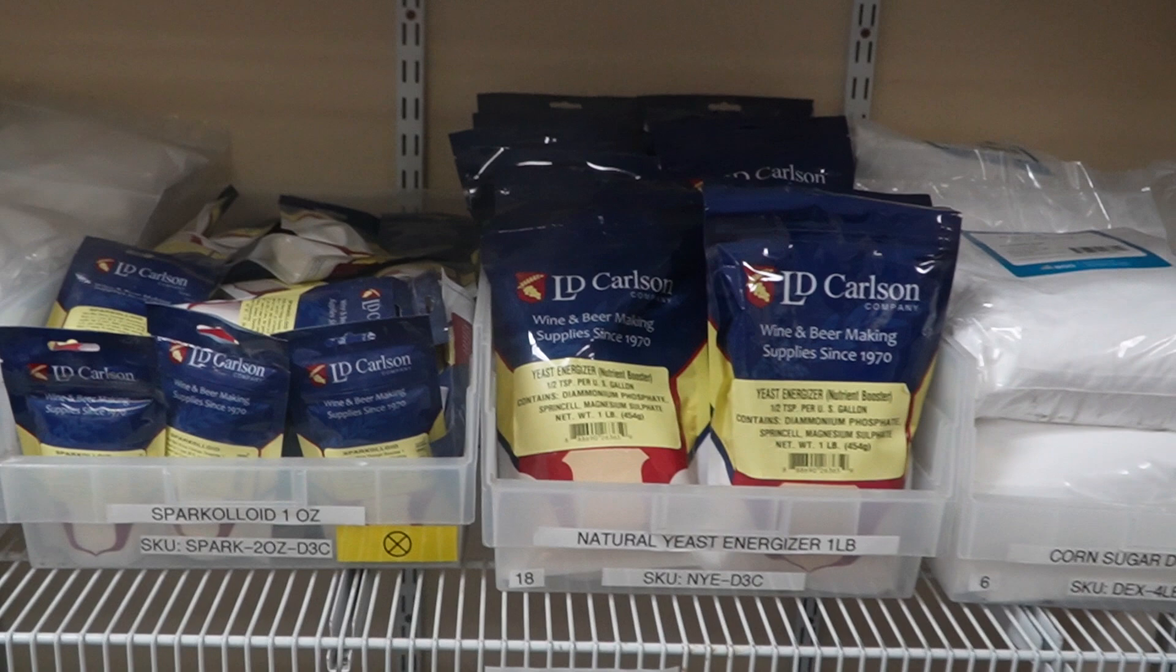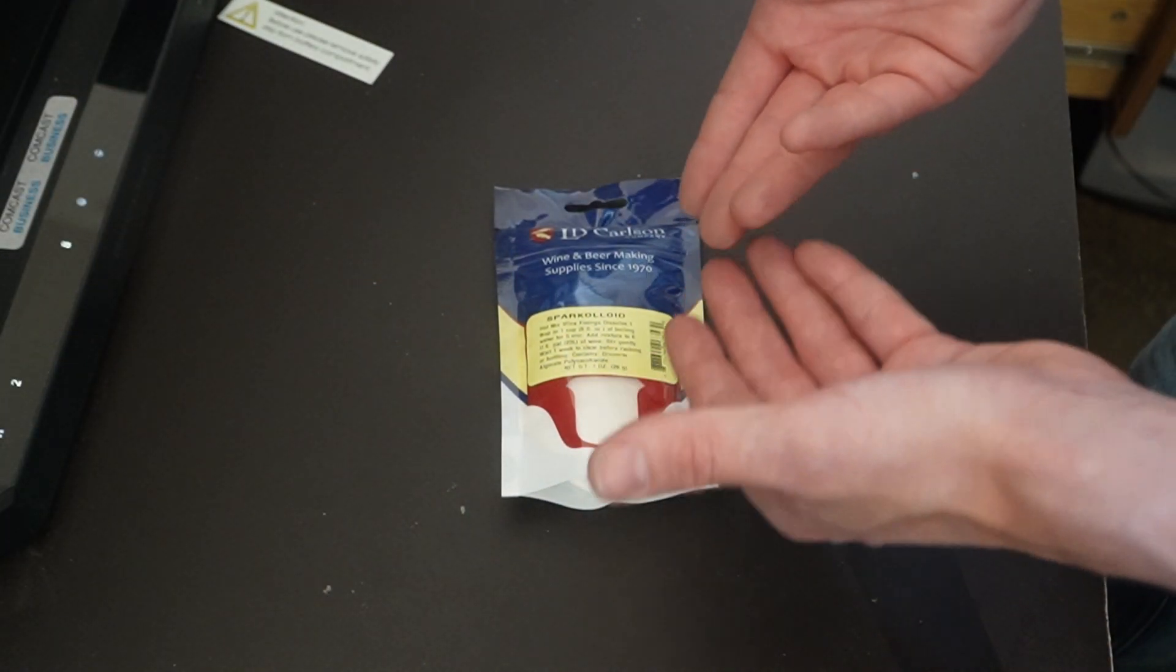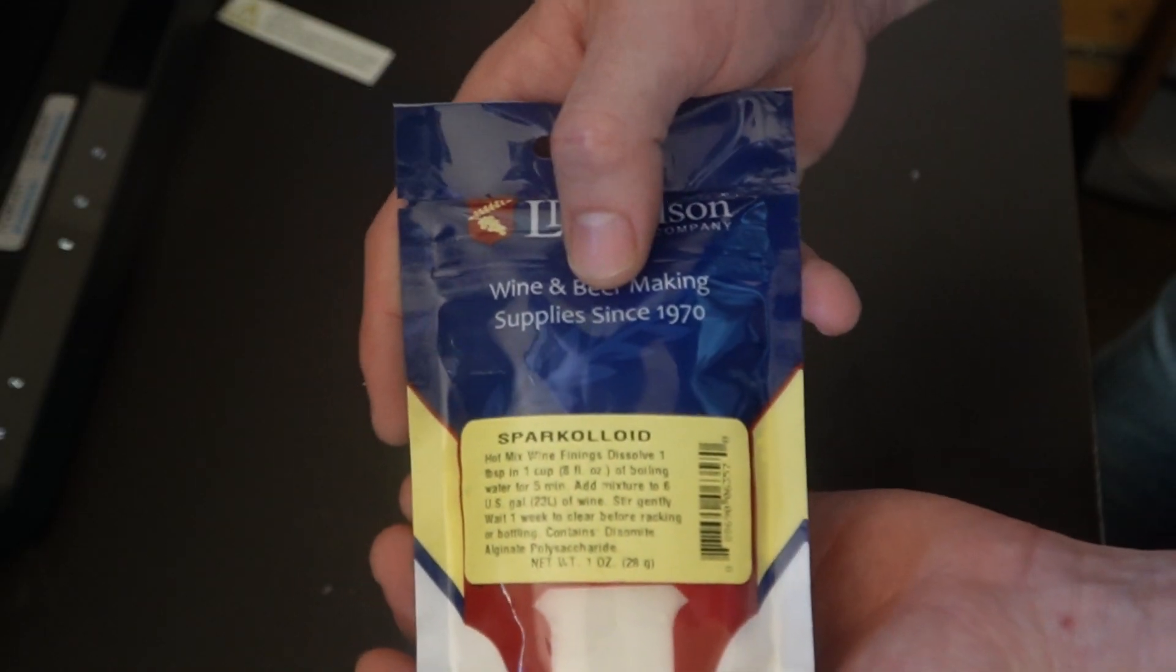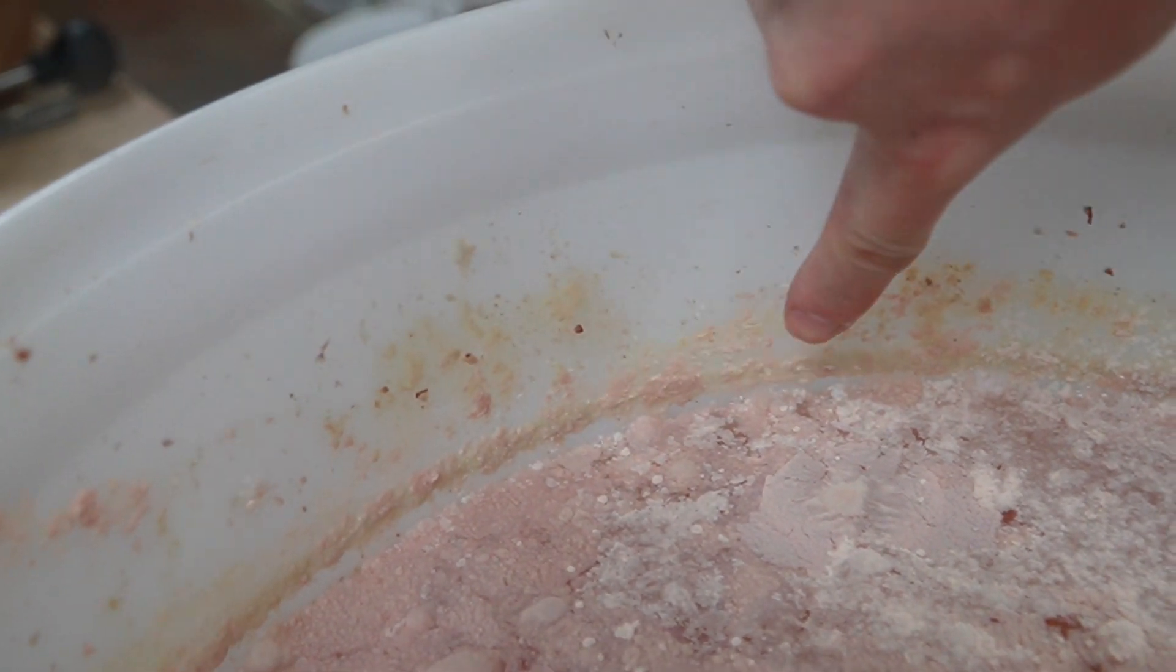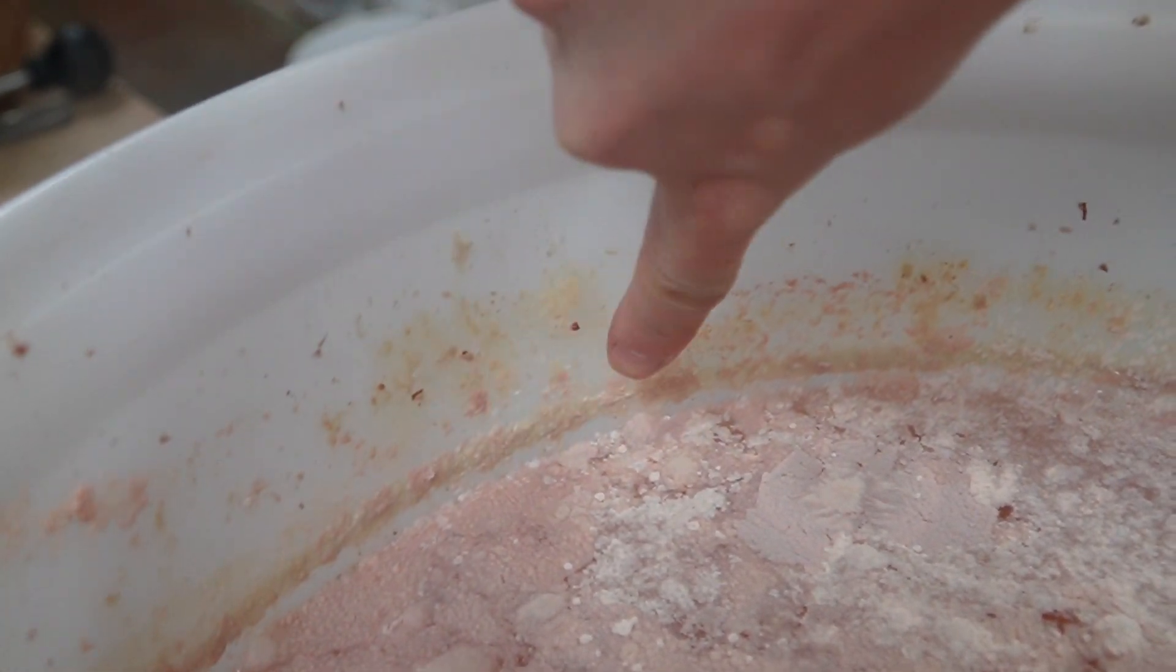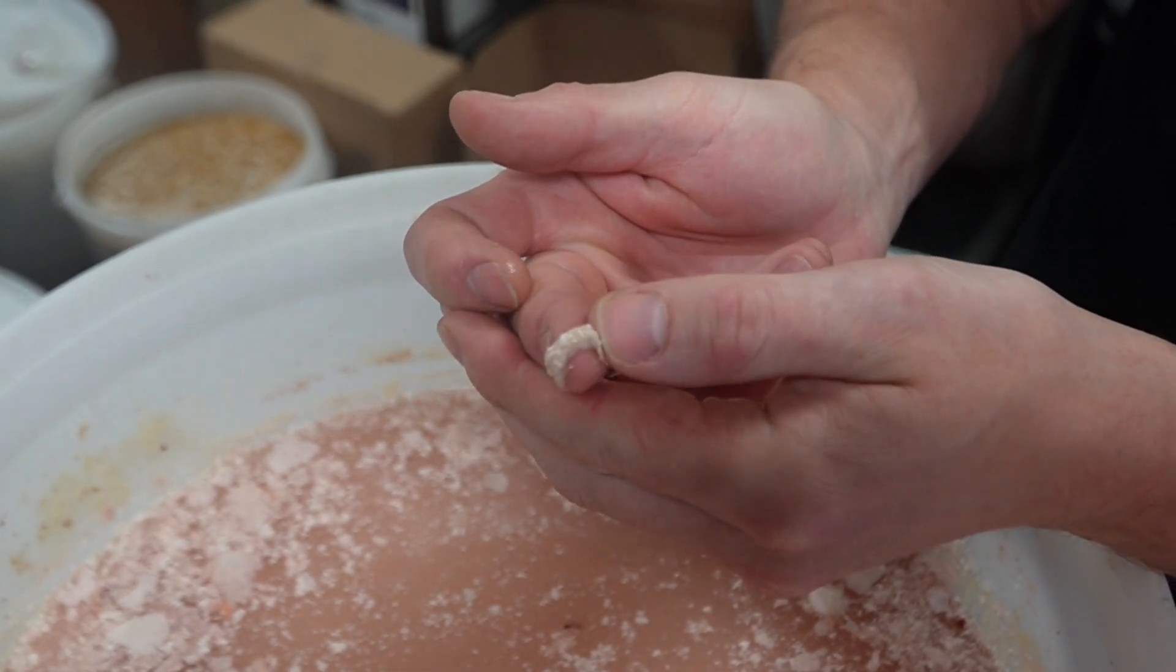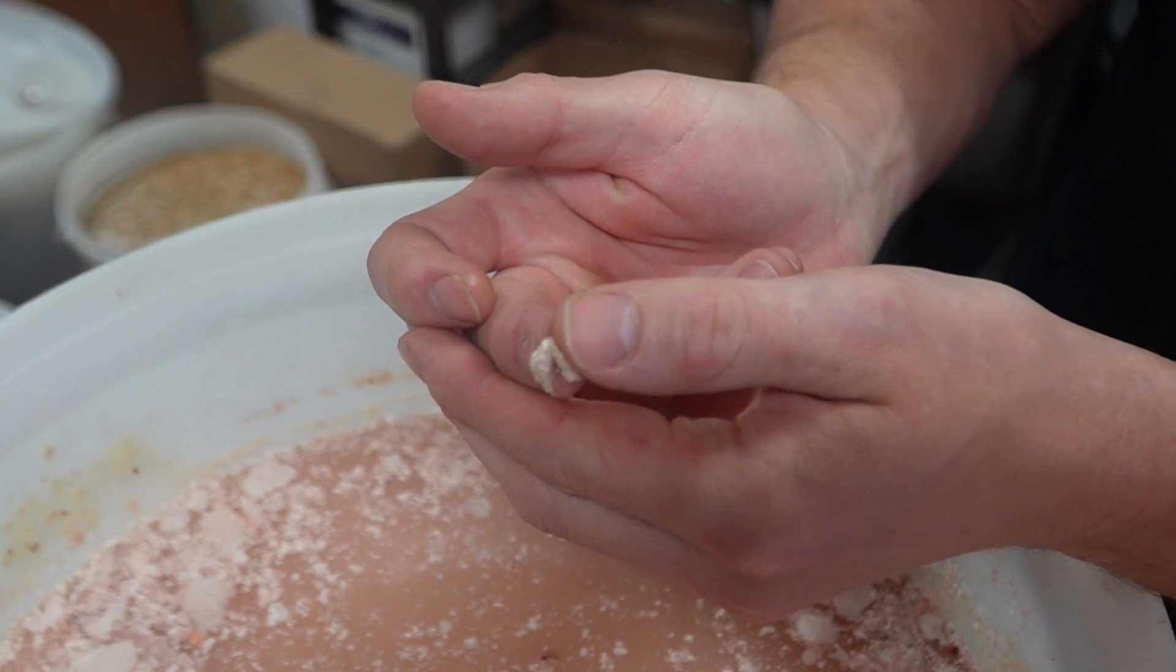Sparkaloid is a clearing agent generally used in wine but also works well in distilling. As yeast works through your fermentation, it'll begin to die and the dead yeast cells float to the top of the fermentation vessel. If you add a tablespoon of this in hot water into your vessel and leave the vessel unagitated, it should drag all those yeast cells down to the bottom so that you can safely siphon the solution over without carrying over that dead yeast.